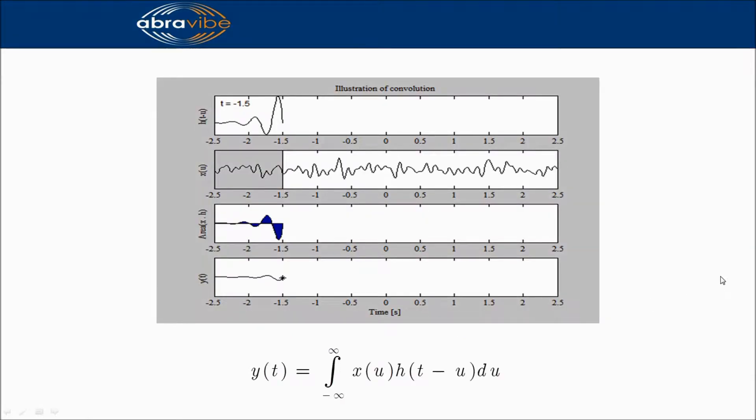In this illustration, we have the impulse response shifted to t equals minus 1.5 seconds in the top plot. In the next plot, we have the input time signal x of u. In the third plot, the area of the product of x of u and h of t minus u for t equals minus 1.5 seconds is shown. And finally, we start the animation.